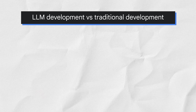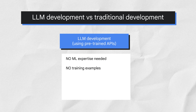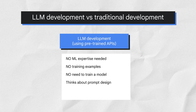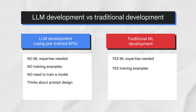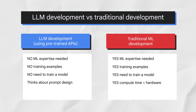Let's compare LLM development using pre-trained models to traditional ML development. With LLM development, you don't need to be an expert. You don't need training examples and there is no need to train a model. All you need to do is think about prompt design, which is a process of creating a prompt that is clear, concise, and informative — an important part of natural language processing, or NLP. In traditional machine learning, you need expertise, training examples, compute time, and hardware. That's a lot more requirements than LLM development.